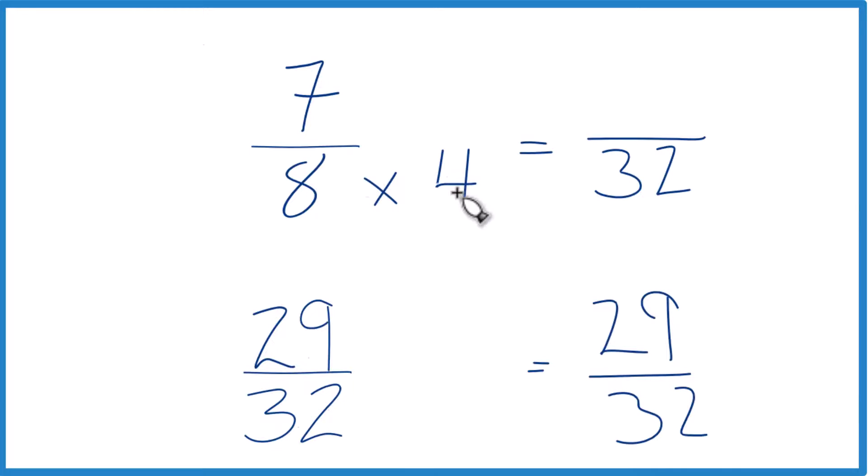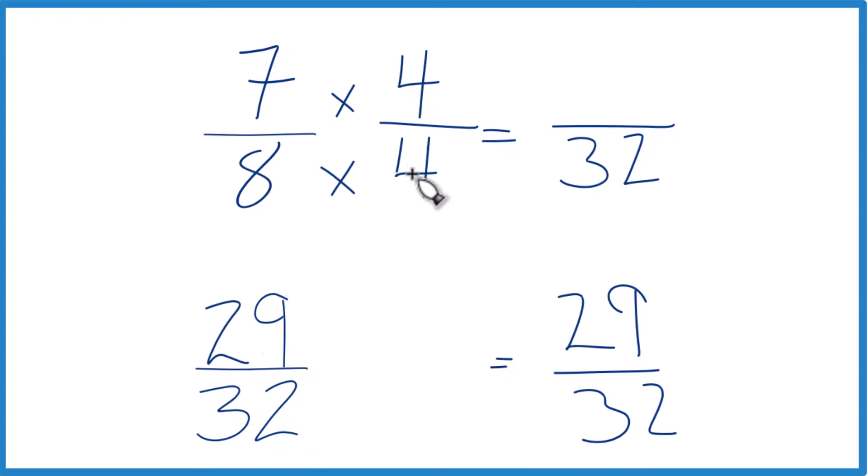Since we multiplied the denominator by 4, let's multiply the numerator by 4. Because this way, it's 4 over 4. 4 divided by 4 is 1. So we're just multiplying by 1. Don't change the value, just the way it's written.